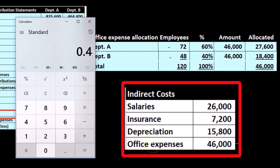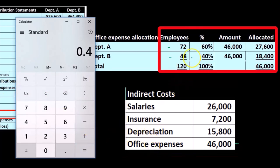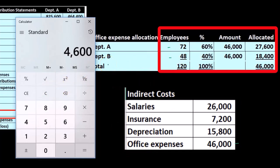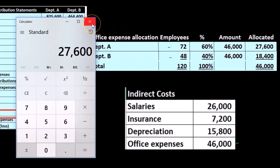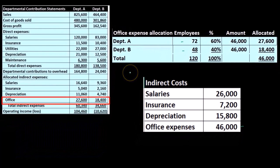We're going to break out the office expenses on a 60/40 basis for Departments A and B based on the number of employees. So we take $46,000 times 0.6, which gives us $27,600, and $46,000 times 0.4 gives us $18,400.